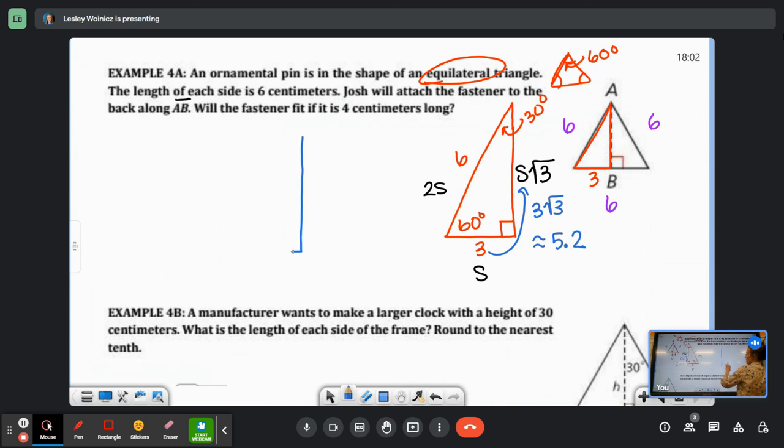So AB is approximately 5.2. Let me draw my picture one more time. This one's 3, this one's 6, this one is 5.2-ish. So will a 4 centimeters long fastener fit?